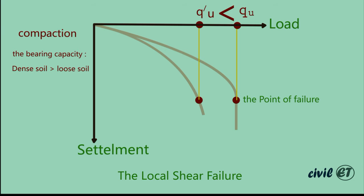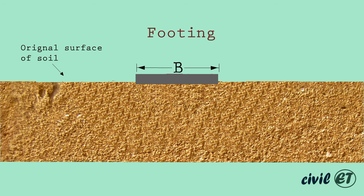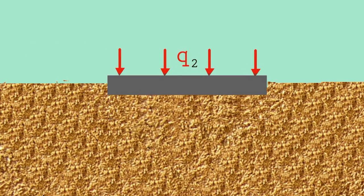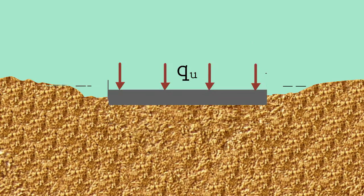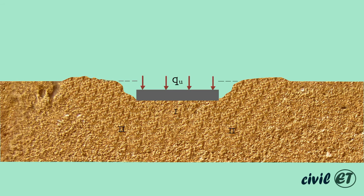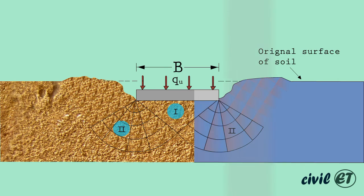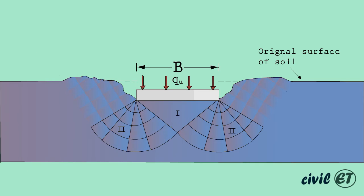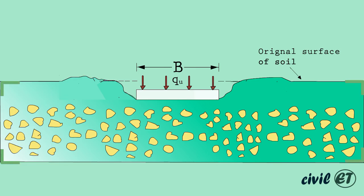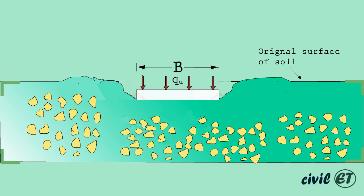Now let's see how local shear failure happens. The triangular zone pushes down similar to general shear failure, but unlike general shear failure, zone 2 goes down through the loose spaces. In other words, it ends up somewhere inside the soil. This means